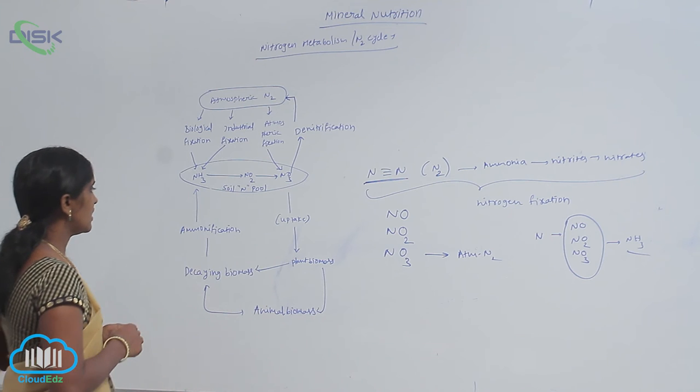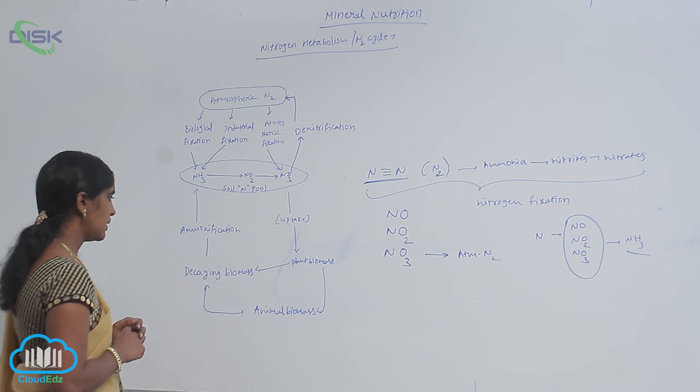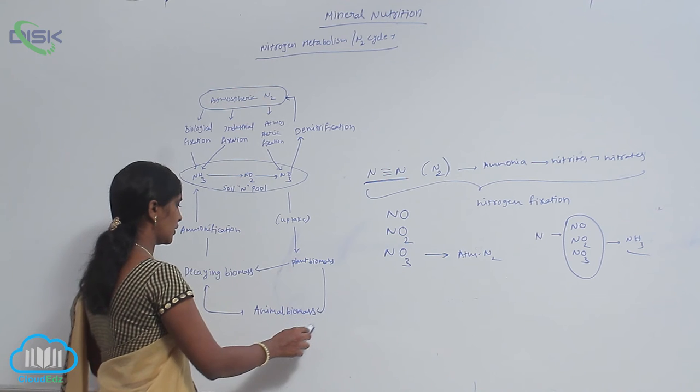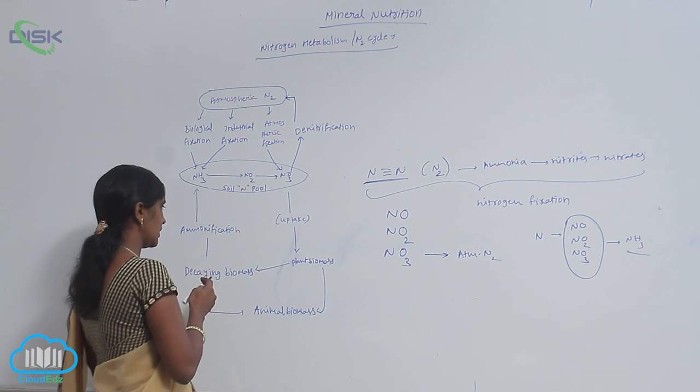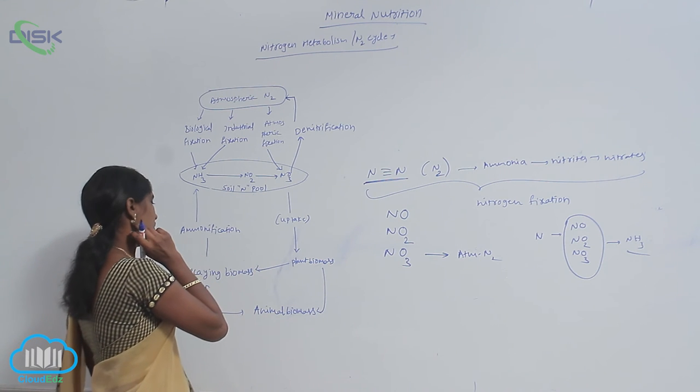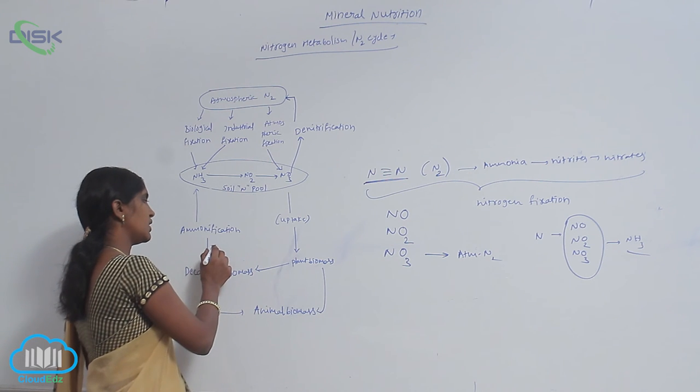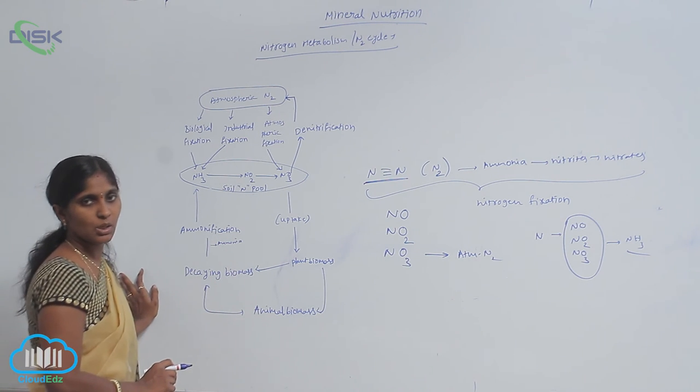When the plants are eaten by animals, in the animal the biomass is accumulated. After that they go for decaying. While decaying, deamination process is going on, so due to that the ammonia is released. That is called ammonification. So the released ammonia is also stored in soil.